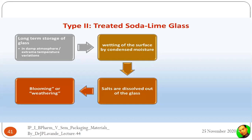Type 2 is the treated soda lime glass. Glass materials generally show a blooming or weathering effect. Upon long-term storage of glass in a damp atmosphere or at extreme temperature variations, wetting of the glass surface by condensed moisture causes salts to dissolve out of the glass material. This effect is called blooming or weathering.